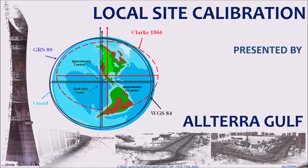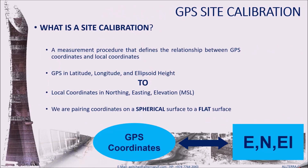Hello everyone, welcome to another video on site calibration. In this video we are going to see how to calibrate a local site, how to derive local grid coordinates, and how to use it in jobs when we are doing stakeout or topographic survey on site. Site calibration is a procedure which defines or establishes a relationship between GPS coordinates in latitude and longitudes to local coordinates in easting, northing, and elevation — converting a spherical surface to a flat local plane.